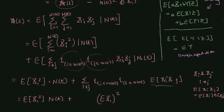How many times does this term appear in the sum? The sum lets i run up to N(t) and j run up to N(t), but we remove all terms where i equals j. There are N(t) such diagonal terms, so the off-diagonal count is N(t) squared minus N(t): we start with N(t) squared elements and remove the N(t) diagonal elements.